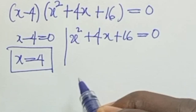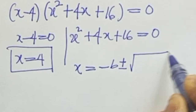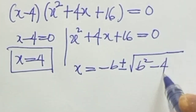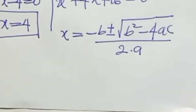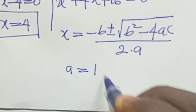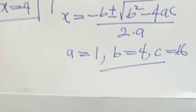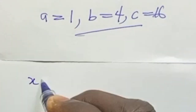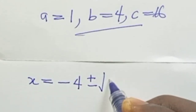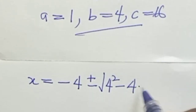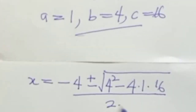For the second part, we use the quadratic formula: s equals negative b plus or minus square root of b squared minus 4ac, all over 2a. Here a is 1, b is 4, and c is 16. So applying this, s becomes: negative 4 plus or minus square root of 4 squared minus 4 times 1 times 16, all over 2 times 1.